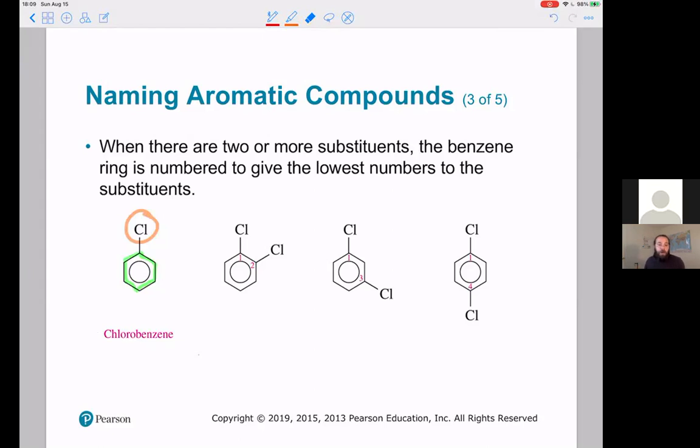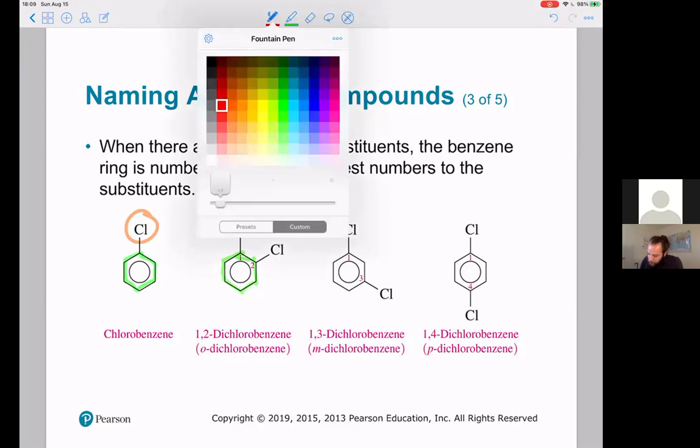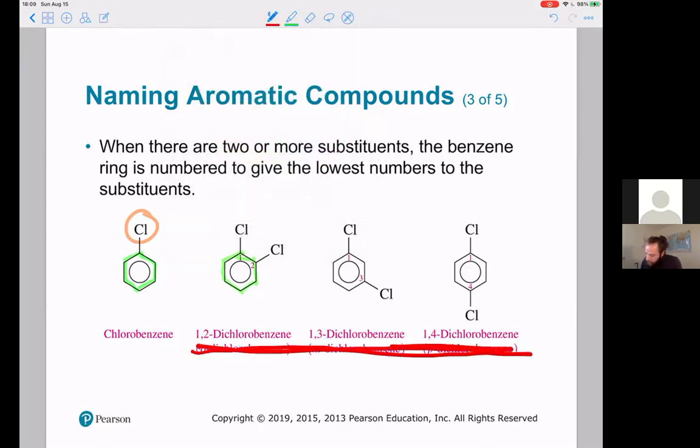When we have two substituents at any points, we start numbering. This would be 1,2-dichlorobenzene. They also call it ortho-dichlorobenzene, or 1,3-dichlorobenzene gets an 'm', or 1,4-dichlorobenzene gets a 'p'. I'm going to make an executive decision and say we're not going to worry about this in our class, as long as you know how to name them using the IUPAC naming scheme.